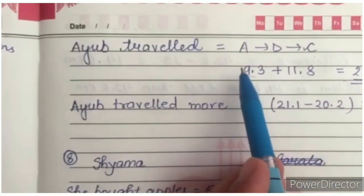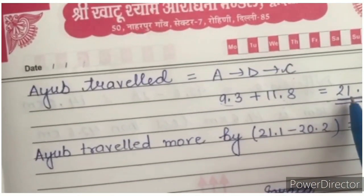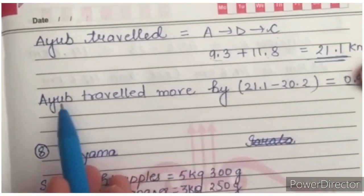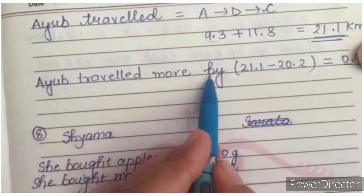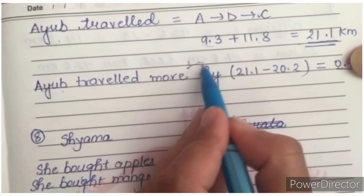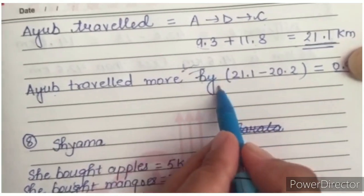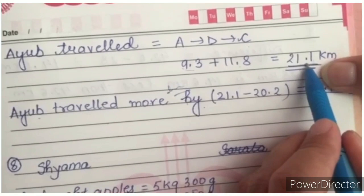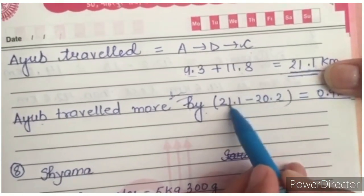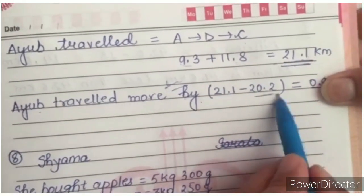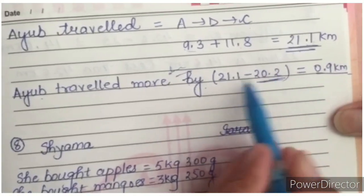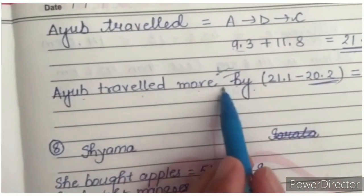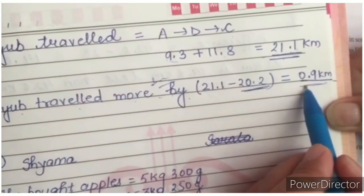So we have to tell who has travelled more distance. It is 21.1 km and Dinesh was 20.2 km. So we will write Ayub travelled more distance by how much. You will find the difference between more and less. Which one is more? 21.1 minus what is the distance travelled by Dinesh? 20.2. What is the difference? 0.9 km. Ayub travelled more distance by 0.9 km.